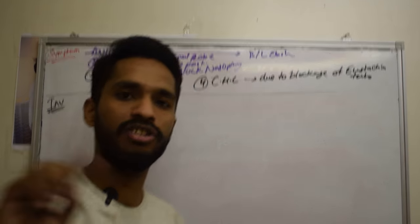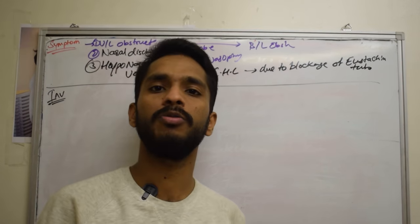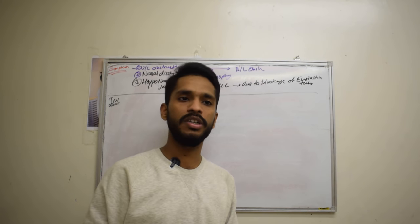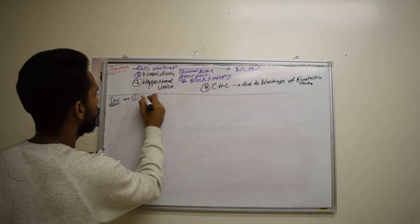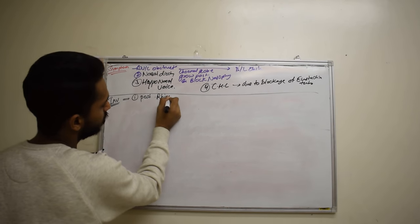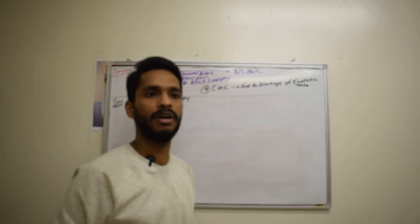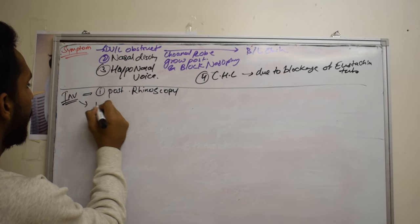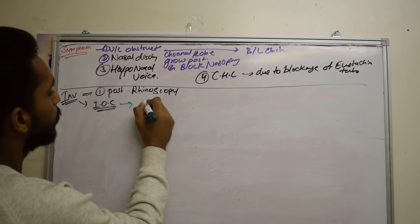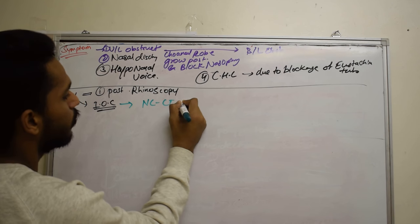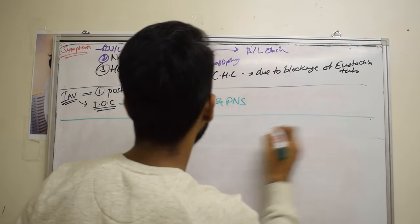Regarding investigations: in case of anterochoanal polyp, we do anterior rhinoscopy, but sometimes we may not be able to see the polyp, so we do posterior rhinoscopy, where we see a fleshy white spherical mass. The investigation of choice for both types of polyp is NCCT of the nose and paranasal sinuses.